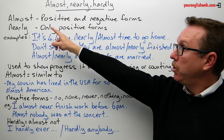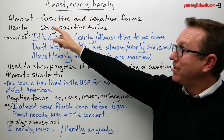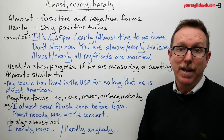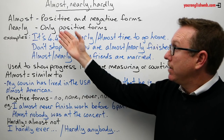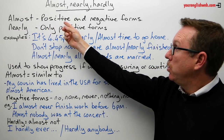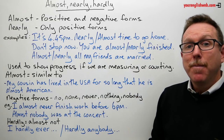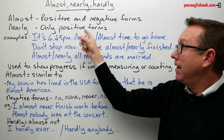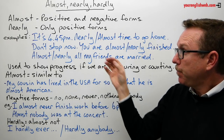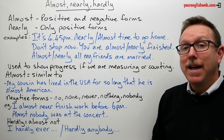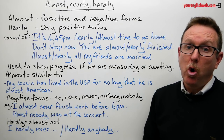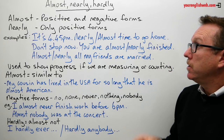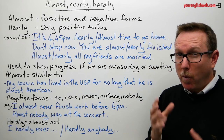The first two we're going to look at are 'almost' and 'nearly.' These two are very similar in meaning. 'Almost' can be used in both positive and negative forms, but the difference is that 'nearly' can only be used in positive forms. So we can only use 'nearly' in positive forms, while 'almost' can be used in both.